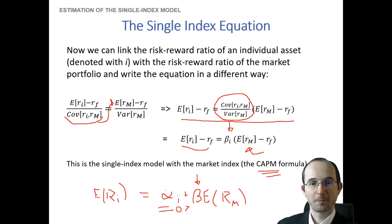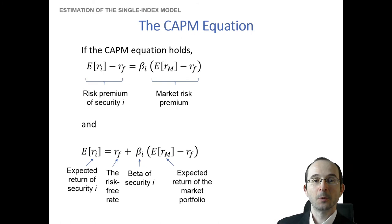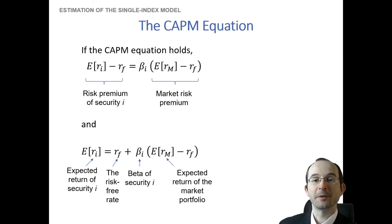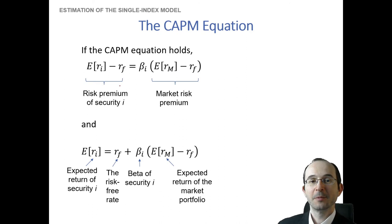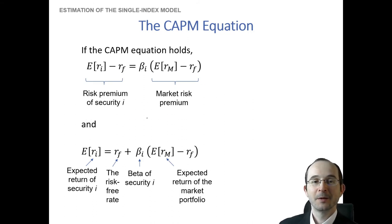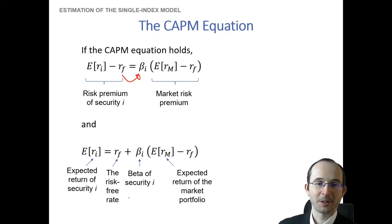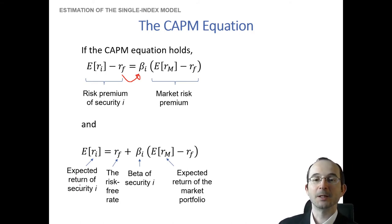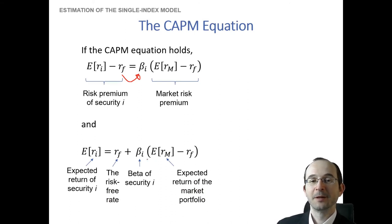So if we think about this as the CAPM — a single index model with the market portfolio as the macroeconomic factor — then the risk premium of any security is explained by the exposure of that security to the market times the market risk premium. Moving the risk-free term to the right-hand side by adding the risk-free rate to both sides, we can say that the expected return on any security — not an excess return, but just the raw return — is the risk-free rate plus beta times the market risk premium.